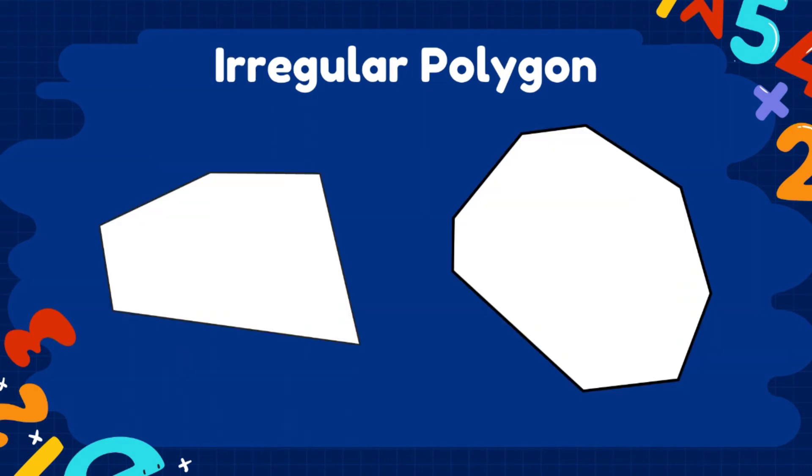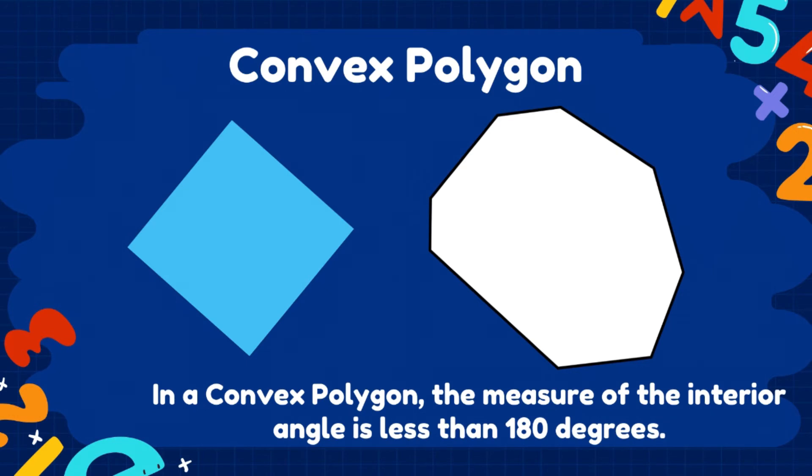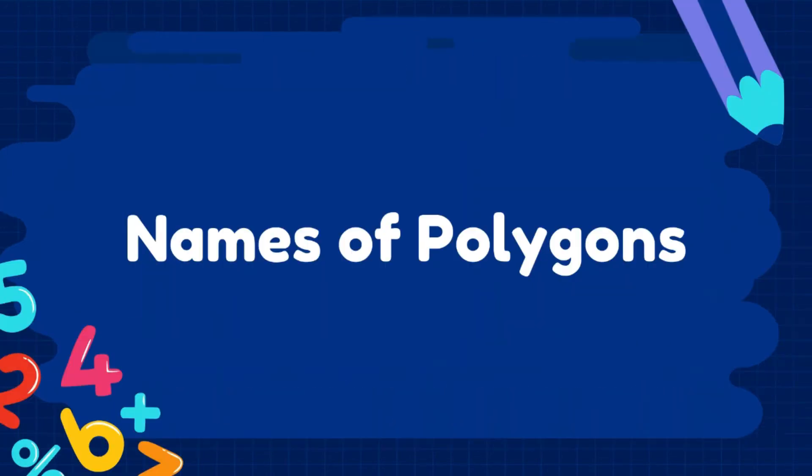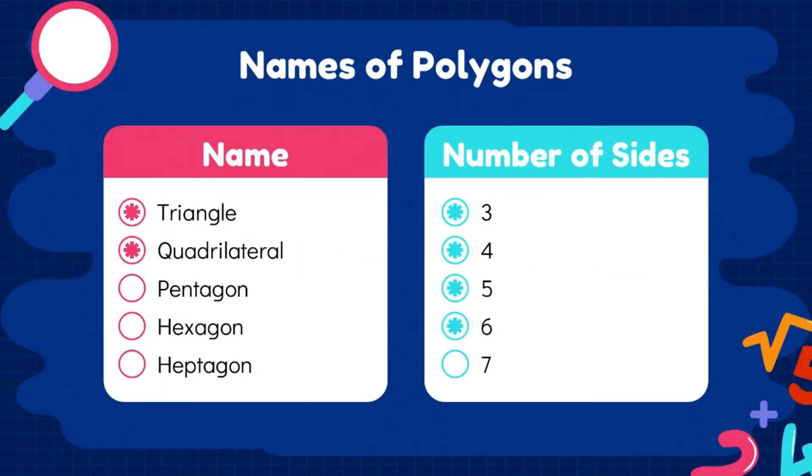Now let us proceed to the names of the polygons because even polygons have names. The name of a polygon that has 3 sides is triangle, while the polygon that has 4 sides is called as quadrilateral. Next, we have pentagon which has 5 sides, and then the hexagon which has 6 sides, and the heptagon has 7 sides and so on.